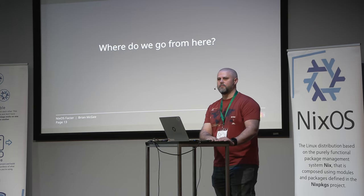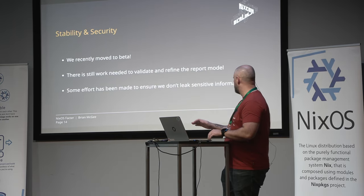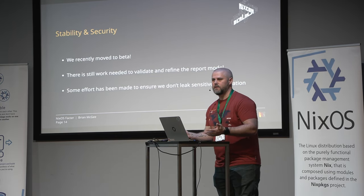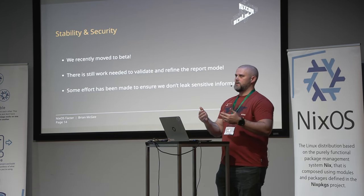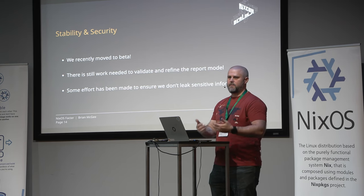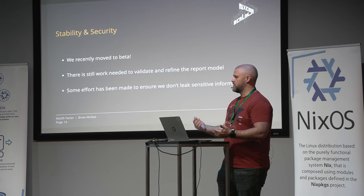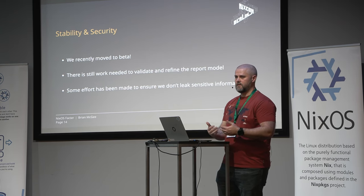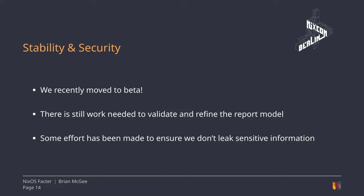So, where do we go from here? There are a few things. The first is stability and security. We still need to validate that we're capturing information correctly. Even just last week we discovered we made some assumptions about languages within SMBIOS — turns out there can be more than one, so we fixed that. We've had other minor bugs like our Xen detection, which is why we might go back to systemd-detect-virt rather than doing it ourselves.